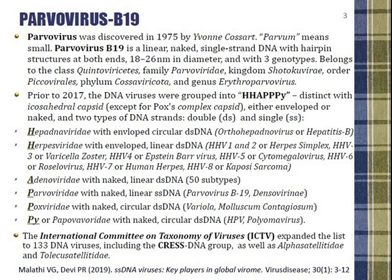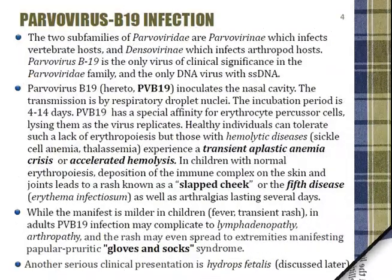My former presentation was from 2017, and since then the International Committee on Taxonomy of Viruses has expanded the list to 133 DNA viruses, including a crAssphage DNA group. Thus the taxonomy is dynamic, but what remains constant is knowledge of the structure of Parvovirus.